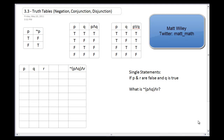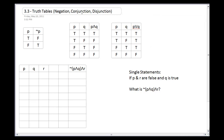Truth tables are one of the cooler things we can do in logic. What they enable us to do is take compound statements — covering negation, conjunction, and disjunction — and completely observe and verify whether those statements are true or false, depending on whether the initial statements P and Q are true or false. The idea is you work out every possibility and then you can see what's going to happen no matter what.